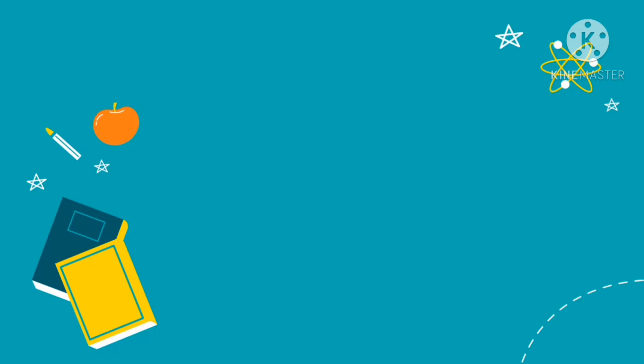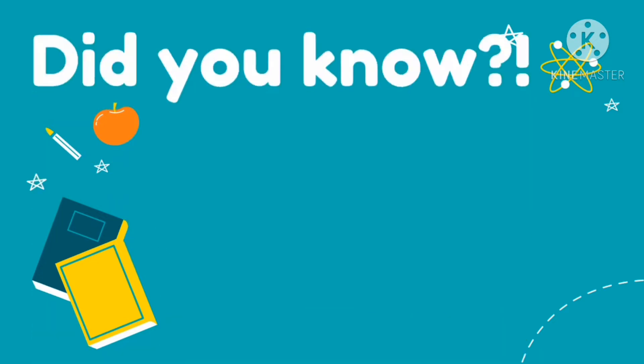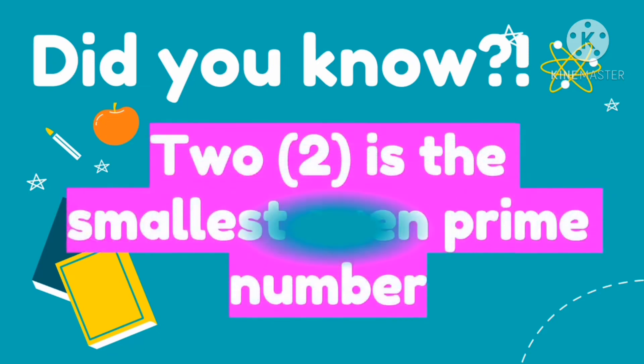Before we proceed to the definition of a composite number, I will give you a trivia. Did you know that 2 is the smallest even prime number? So 2 is a prime number because its factors are only 2 and 1. That's why it's the smallest even prime number.